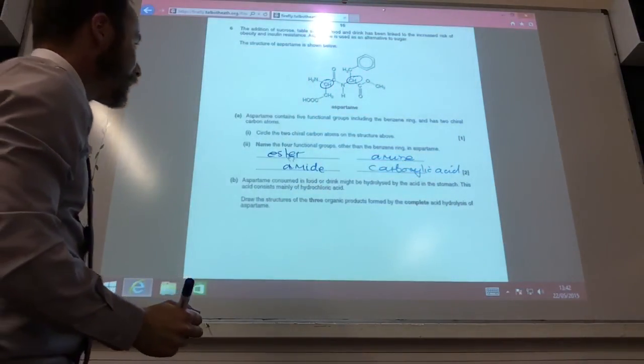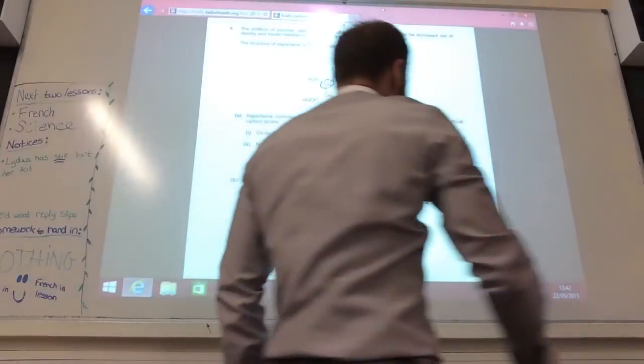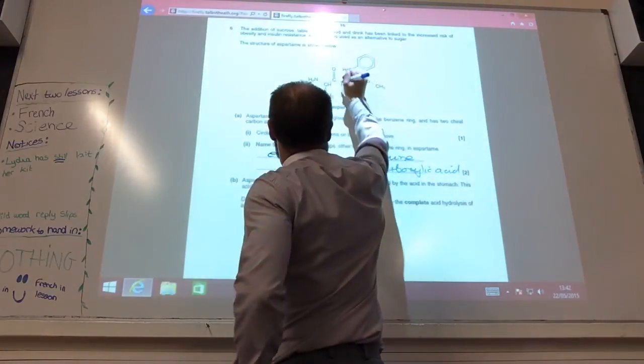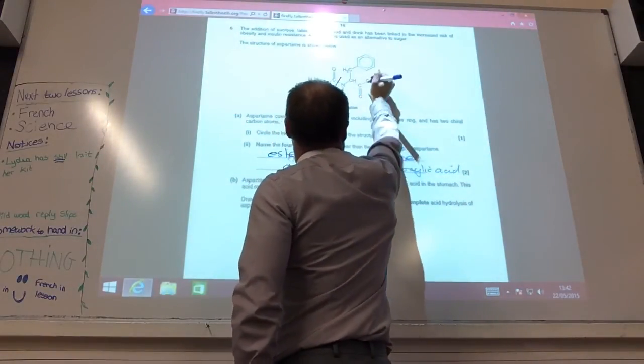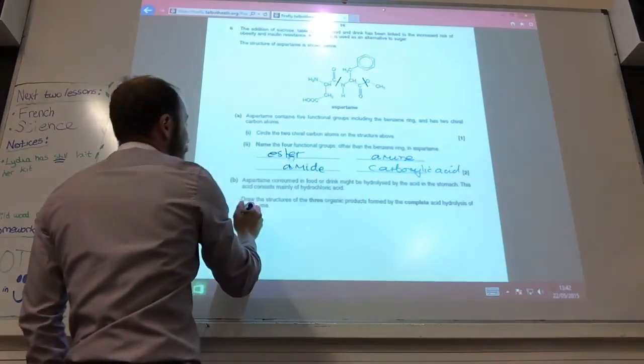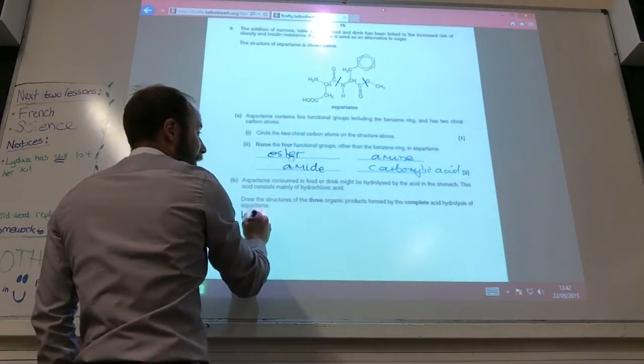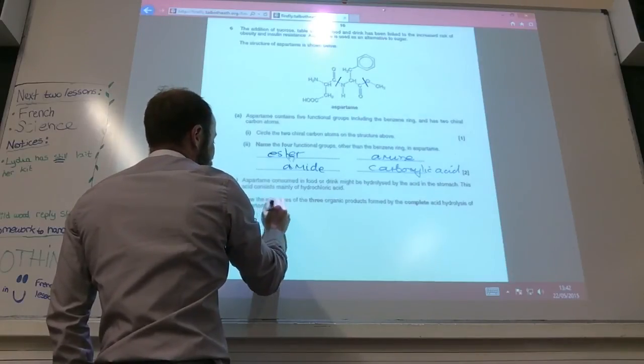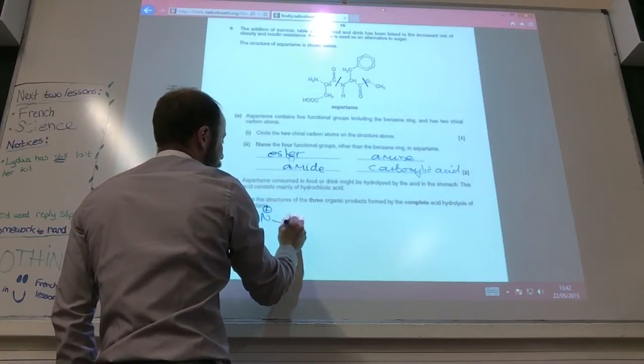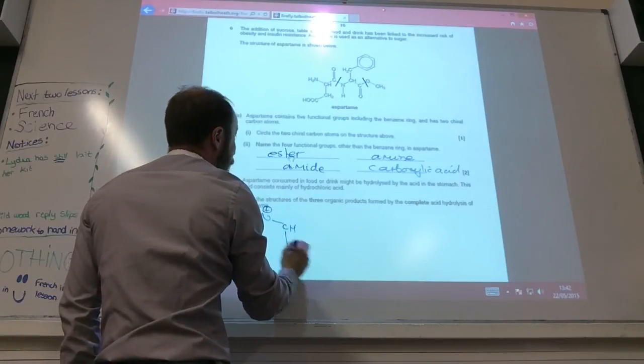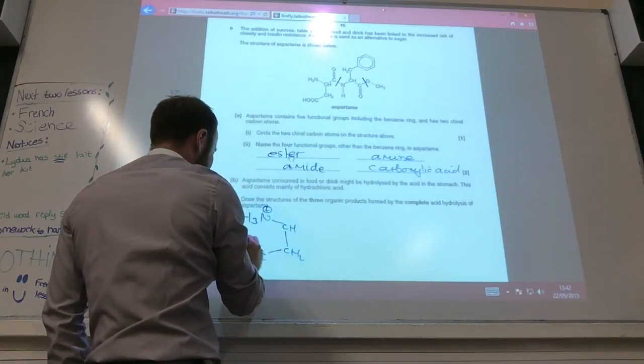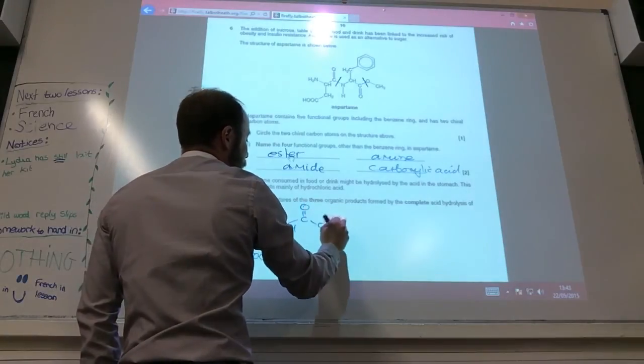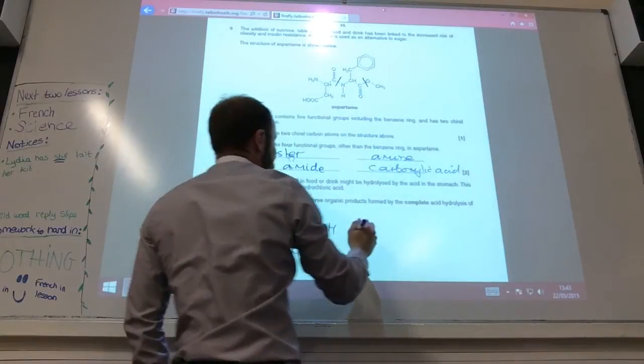Draw the structure of complete hydrolysis of the molecule. So if I've got complete hydrolysis, I am going to break up ester bonds and amide bonds. So let's do this. This is by acid as well. So nitrogens are going to become protonated. So that will become a carboxylic acid group.